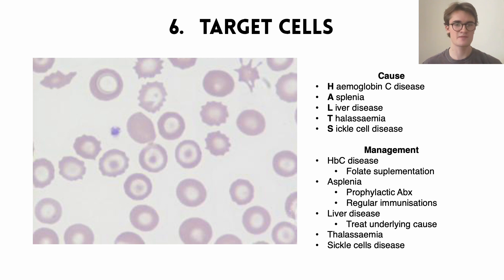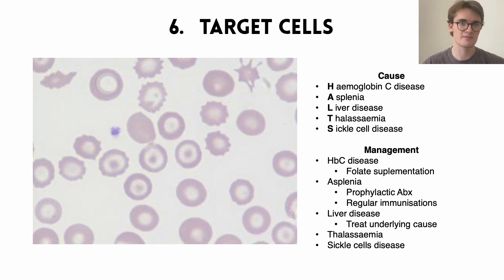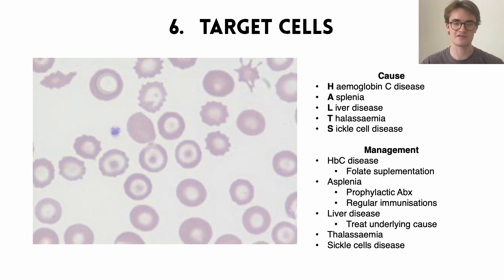The next blood smear to discuss is target cells. On first glance the smear looks quite normal, with some circular red blood cells with a pale center. But in the middle of the screen we can see abnormal cells that, alongside that pale center, have a second dark spot in the center — making them look like an archer's target. This is abnormal and has five main causes remembered by the mnemonic HALTS: H-A-L-T-S.